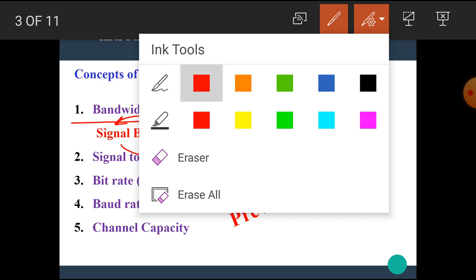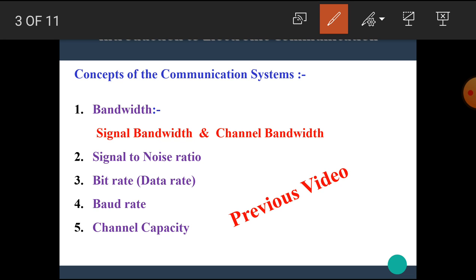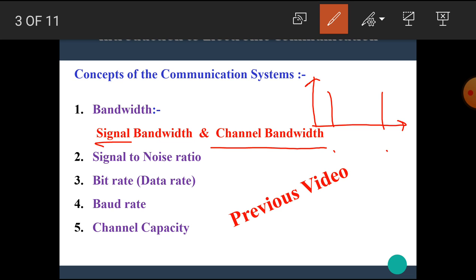Let's see the technical definitions of signal bandwidth and channel bandwidth. The signal bandwidth is defined as the portion of the electromagnetic spectrum occupied by a signal. The channel bandwidth is defined as the range of frequencies required to transmit the desired signal. We can calculate bandwidth as follows: if the upper frequency limit is F2 and the lower frequency is F1, then the bandwidth is F2 minus F1.